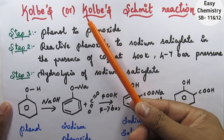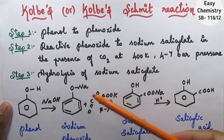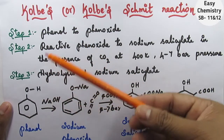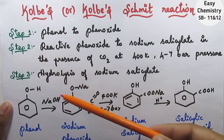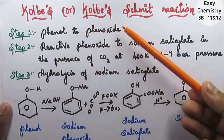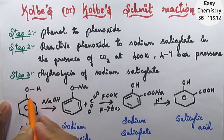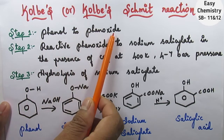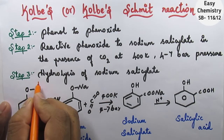What we are going to discuss is the overall reaction. In Step 1, phenol is converted to phenoxide. Phenol is C6H5OH. Phenol loses H+ to give phenoxide.